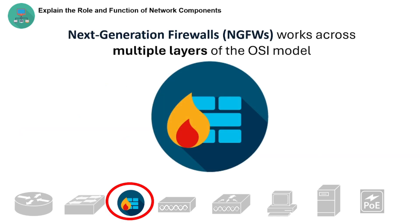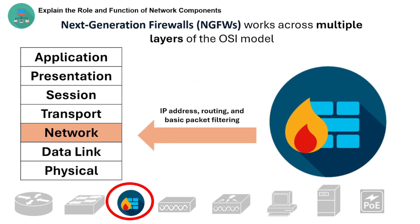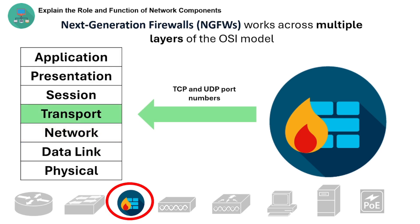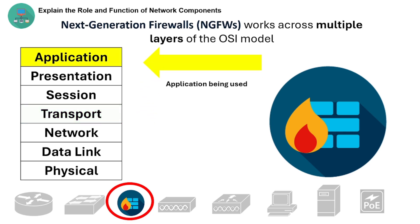Next-generation firewalls work across multiple layers of the OSI model. At layer 3, they make decisions based on IP address, routing, and basic packet filtering like a traditional firewall. At layer 4, they inspect traffic based on TCP and UDP port numbers — for example, blocking or allowing traffic on port 443 for HTTPS. Additionally, at layer 7, they deeply inspect and control traffic based on the actual application — for example, allowing Gmail but blocking YouTube, even if both use the same port.